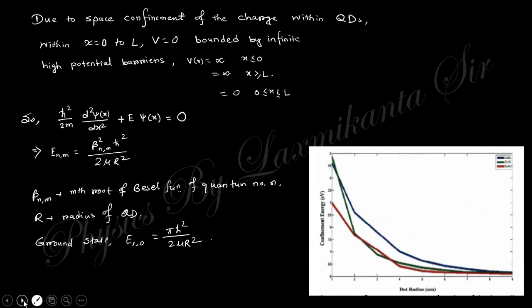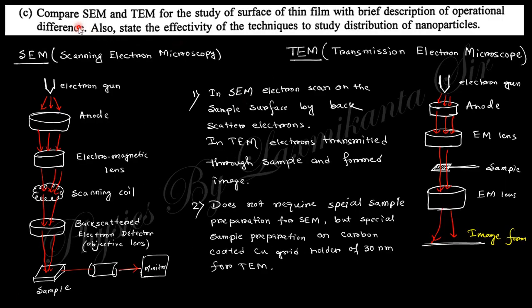Next question: Compare the SEM scanning electron microscope and TEM transmission electron microscope for the study of surface of thin film with brief description of operational difference. Also state the effectiveness of the technique for study distribution of nanoparticle. Within the SEM and TEM, there are electron guns which actually detect the samples. Here we cannot use optical light, we need to use electron or X-ray because of the comparability of wavelength. These electrons coming from the electron gun are attracted towards the anode, then are aligned by electromagnetic lens in both cases.